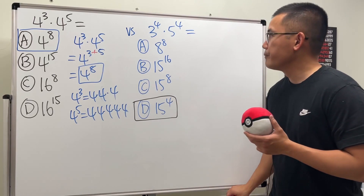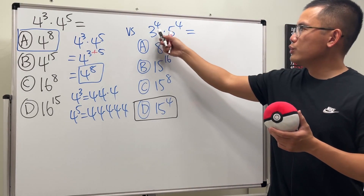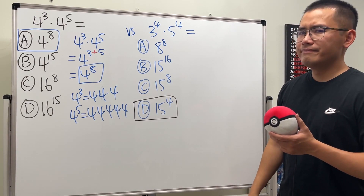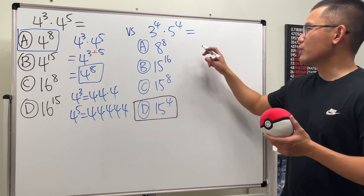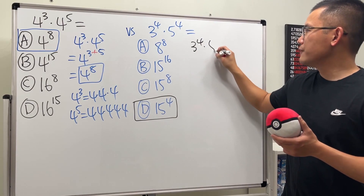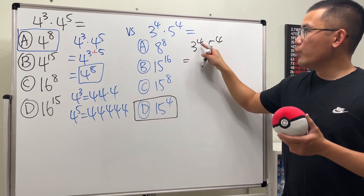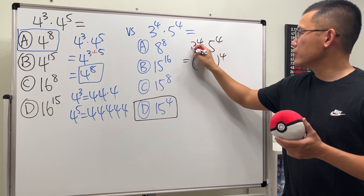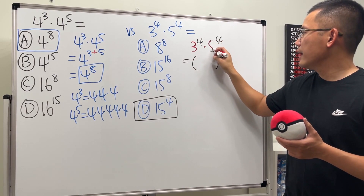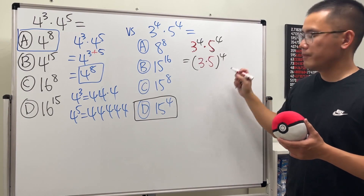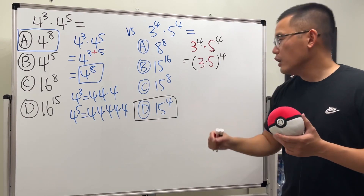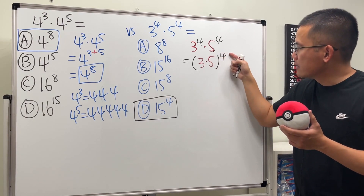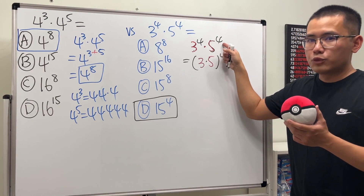Now, if you look at this one: when we have 3 to the 4th power times 5 to the 4th power, when we have the same exponent, we can do the following — just put the exponent on the outside and multiply the bases inside. So 3 times 5, raised to the 4th power. The reason is because when we have a multiplication inside raised to an exponent, we can distribute the exponent — and right now we're just doing it backwards.